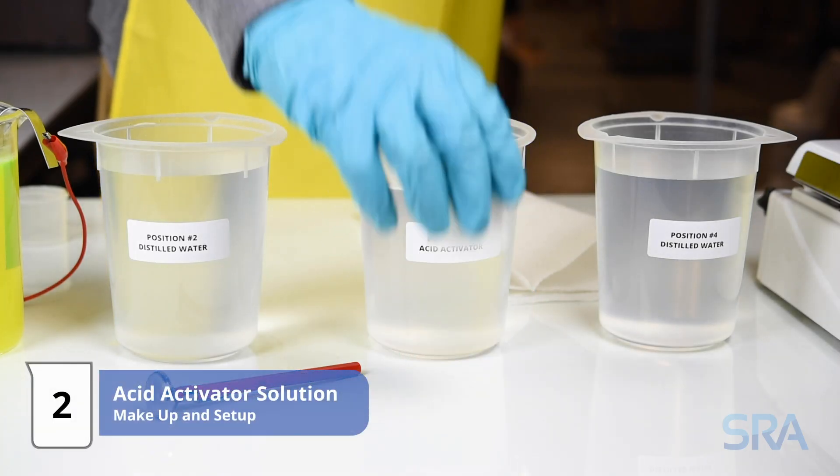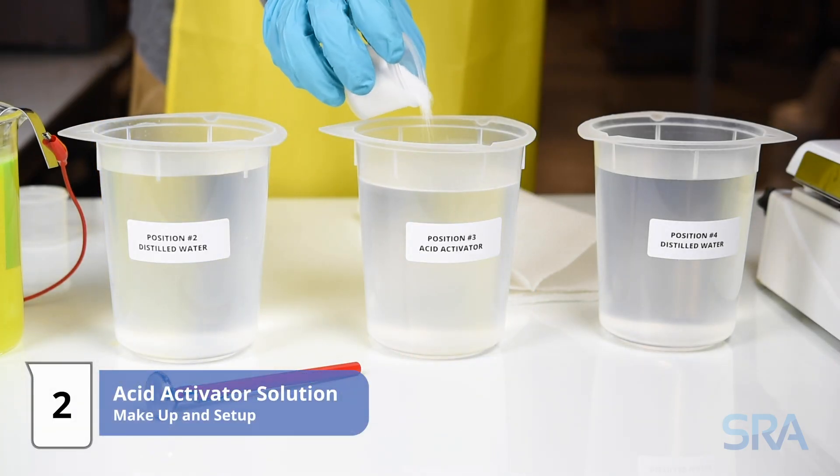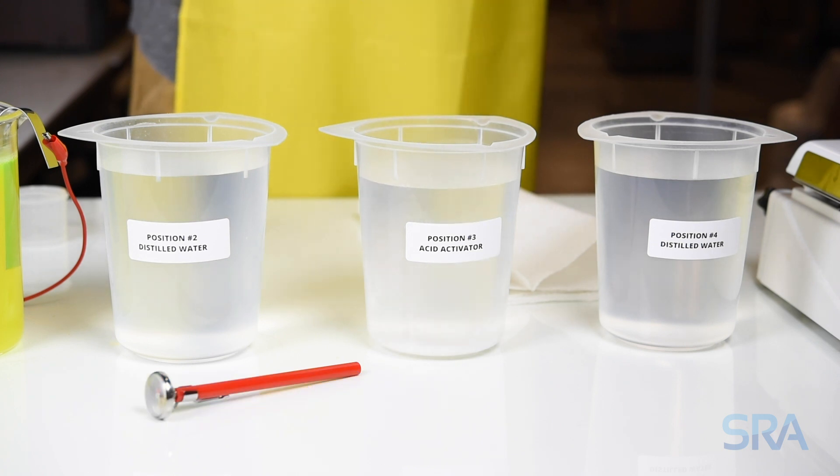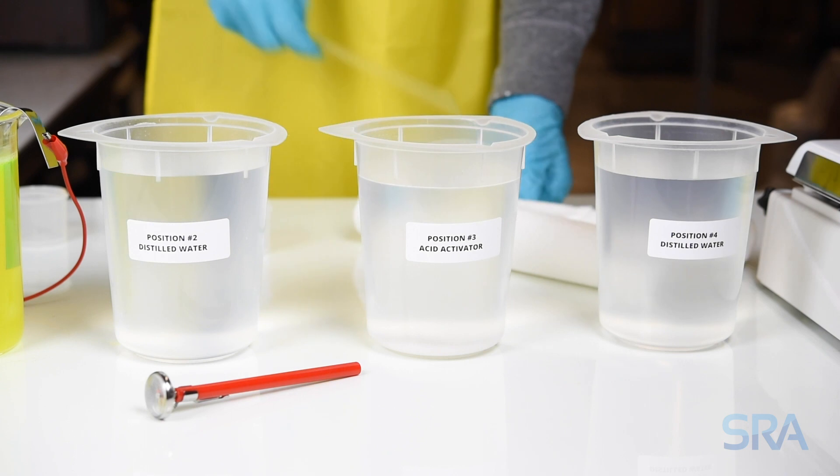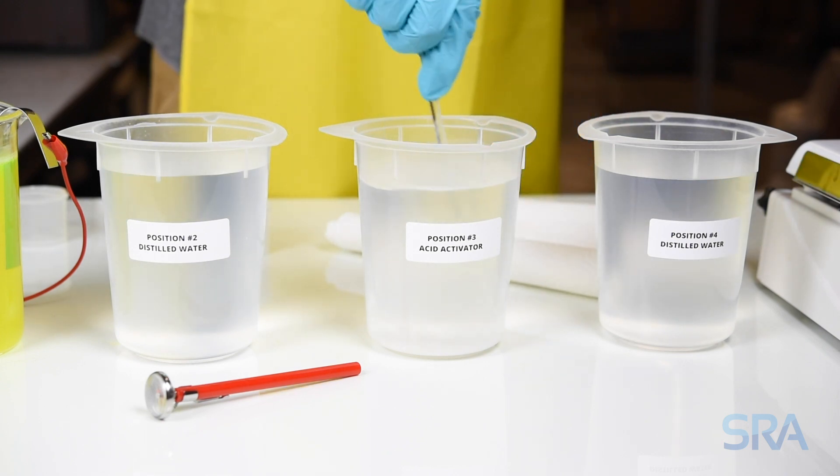The second step is to make up the acid activator. Start by pouring 30 grams of activator salt into another liter of distilled water. Now grab your stirring rod and mix the solution until it is completely dissolved in the water.